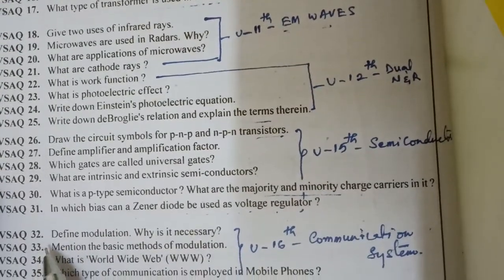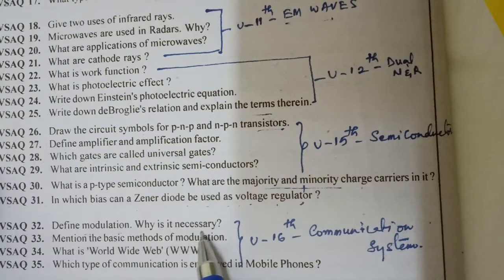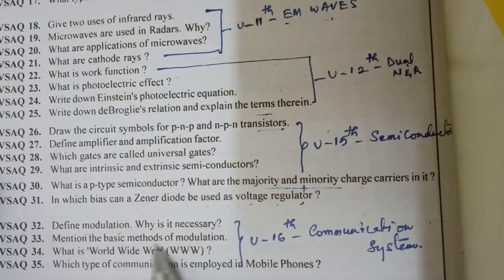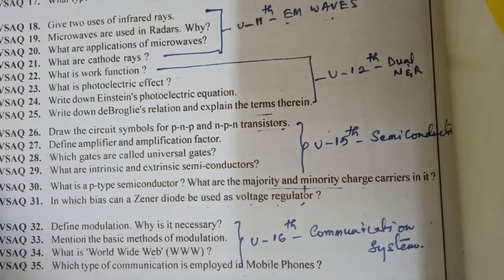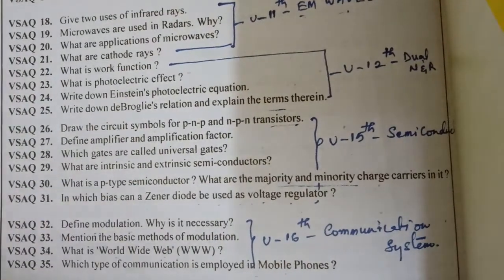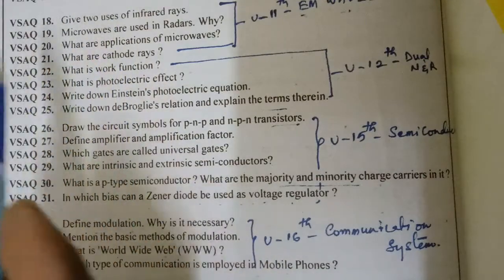Thirty-second question: define modulation and why is it necessary? Thirty-third: mention the basic methods of modulation. Thirty-fourth: what is the World Wide Web (WWW)? Thirty-fifth: which type of communication is employed in mobile phones? These are the top 35 very short answer questions covering all the listed chapters.